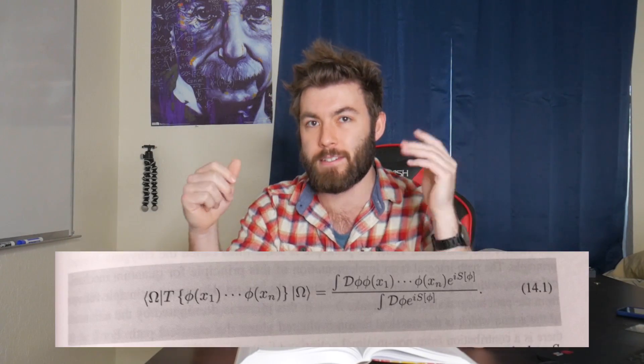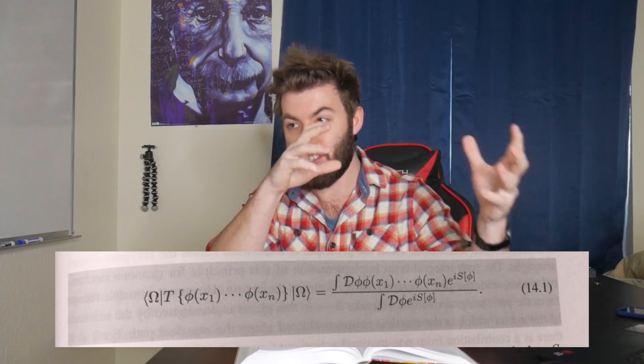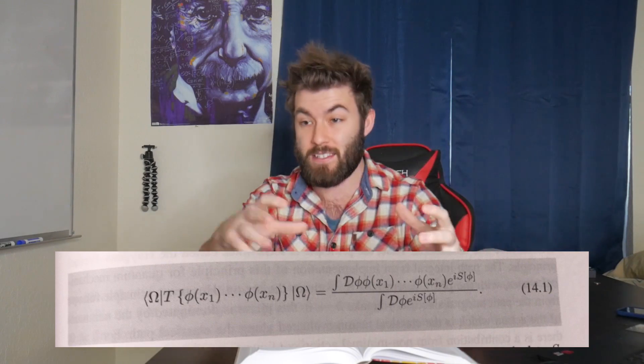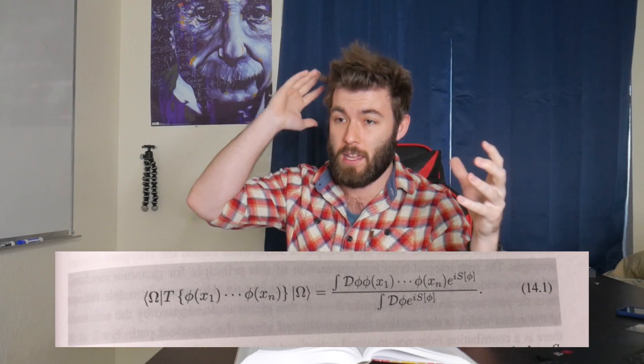But then you switch gears into the Feynman path integral, and it's like now there's no quantization and no more operators, and everything's in terms of classical things somehow — like you sum over classical field configurations that are in terms of some phase given by a classical action, and somehow all this comes together to give you a quantum amplitude. And I don't know.